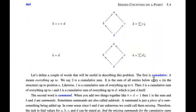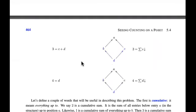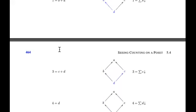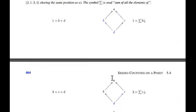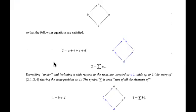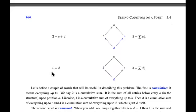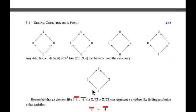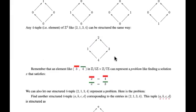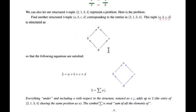What does the word cumulative mean? It means everything up to a point. C and D are both parts of a sum — they're summands — and 3 is the cumulative sum. So we can think of this as a summand problem: we're looking for summands a, b, c, and d that add up to the cumulative sums 2, 1, 3, 4. These are cumulative sums, and we're going to be looking for summands.